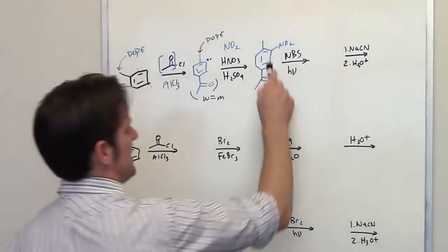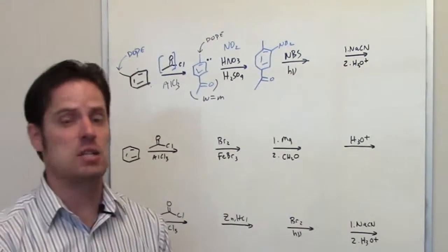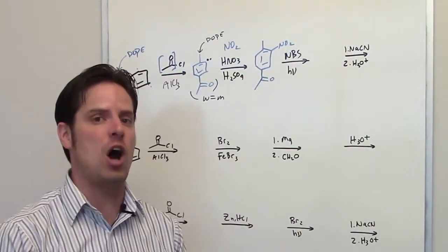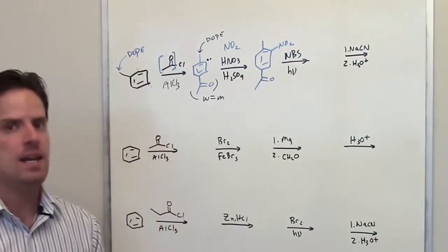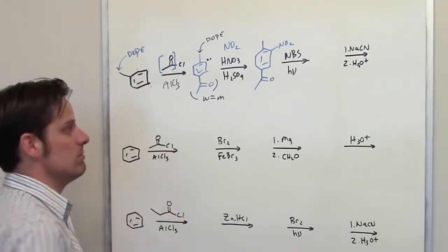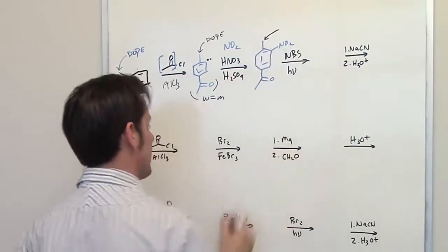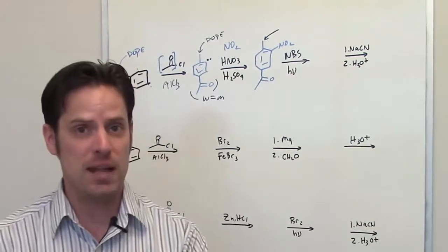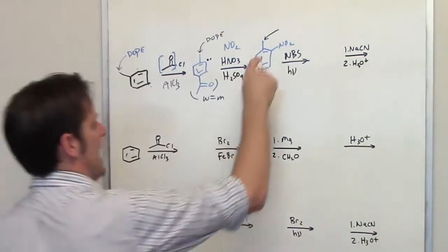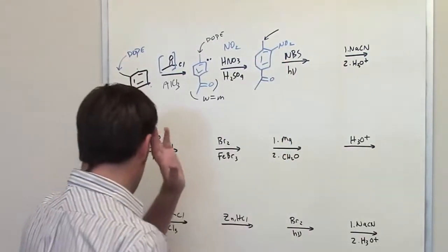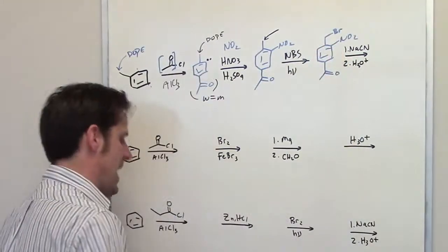For the next reaction, I treat this molecule with NBS and light. NBS and light does the same thing as Br₂ and light — it places a bromine on the benzyl carbon, provided that carbon has at least one hydrogen on it. A benzyl carbon is a carbon one position away from the benzene ring. That position does have at least one hydrogen on it, so the product of this reaction is the benzylic bromide.